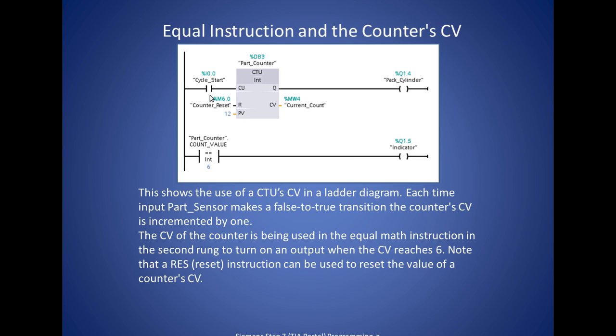And then on the 7th time, the output would be set back to 0. And once the input has gone true 12 times, then this output is set to 1. And it stays 1 until we reset the counter.